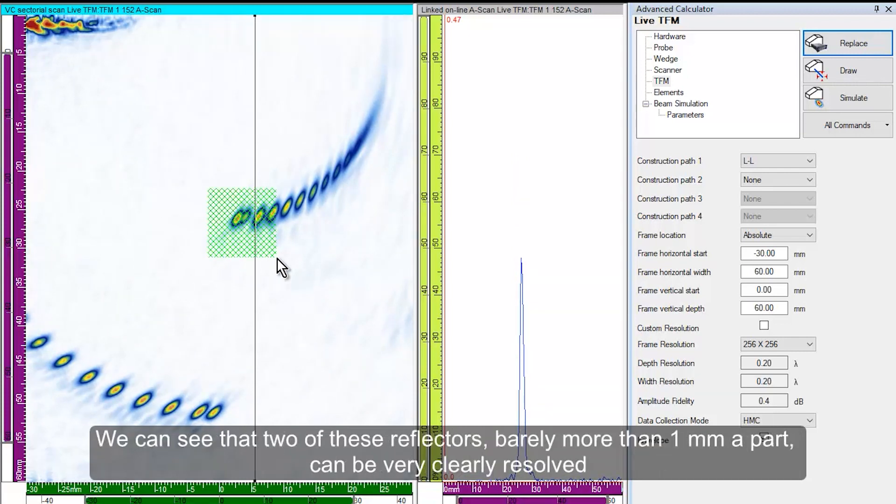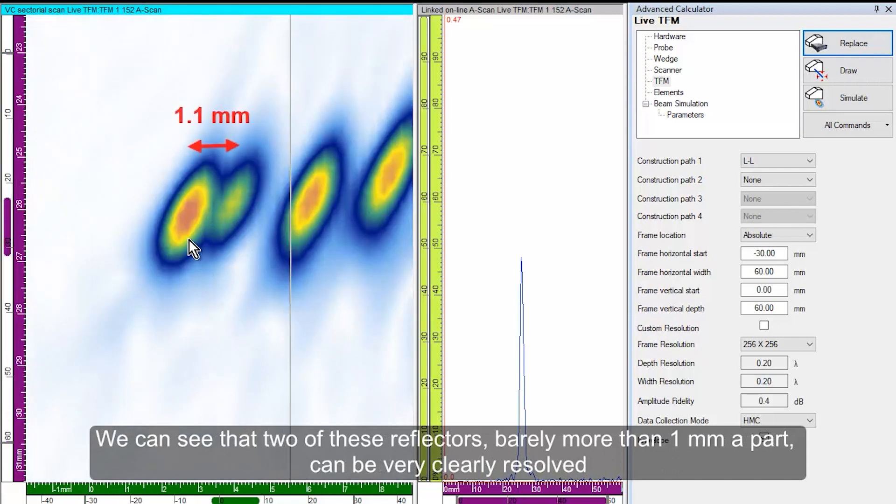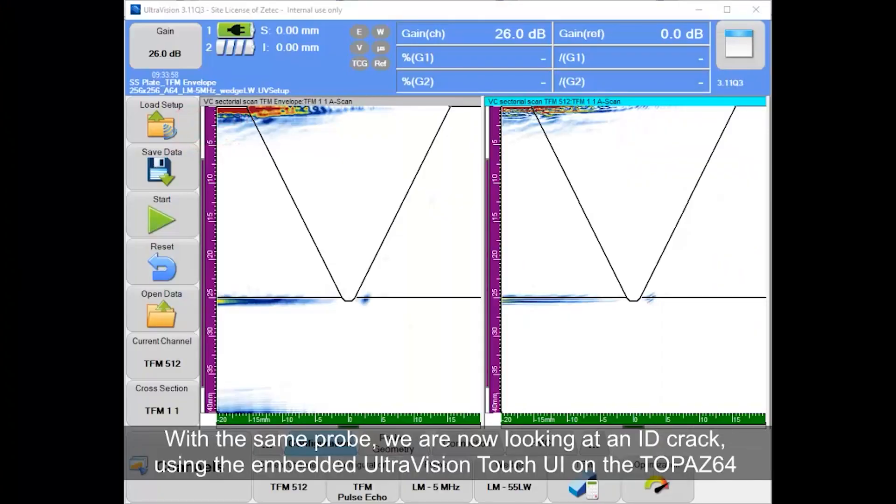We can see that two of these reflectors, barely more than 1 mm apart, can be very clearly resolved.